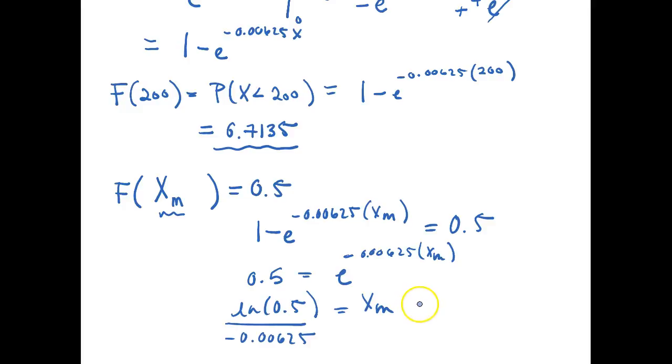This is then equal to 110.9035. So in my exponential distribution this will be then the value where 50 percent of the data falls below that and 50 percent of it falls above it. So this is then my 50th percentile or median.